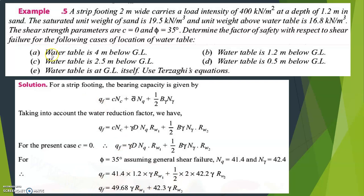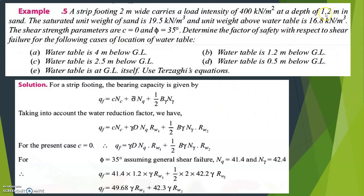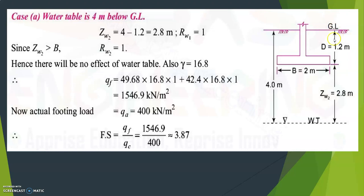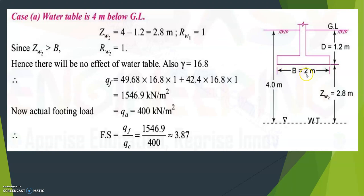Now let us solve Case 1: water table is 4 meters below the ground level. The depth of the foundation is 1.2 meters from the ground level. The width of the footing B is 2 meters. The water table is located 4 meters below the ground level.